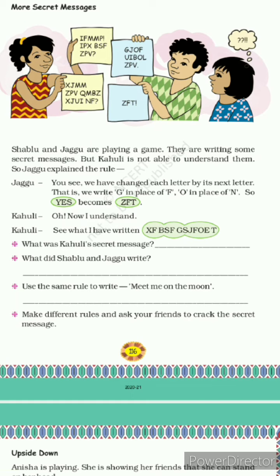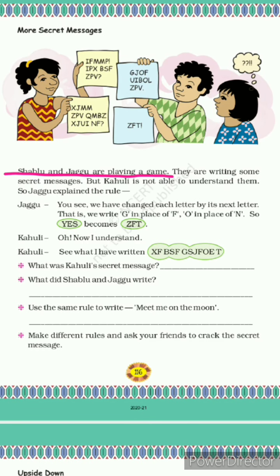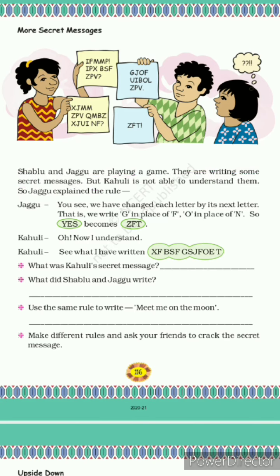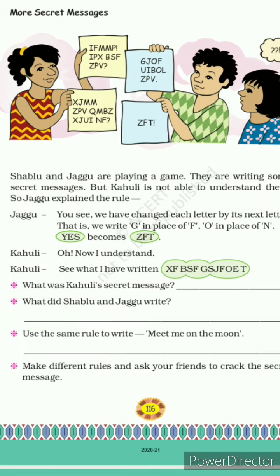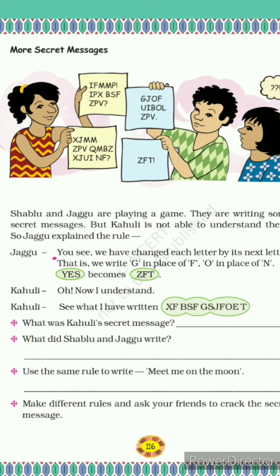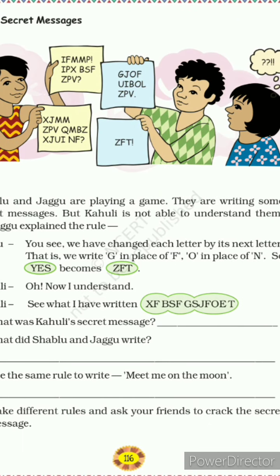There are some friends discussing about secret messages and their conversation is here. Shablu and Jaggu are playing a game. They are writing some secret messages, but Khawli is not able to understand it. So Jaggu explains the rule. The rule is: we have changed each letter by its next letter. That is, we write G in the place of F.